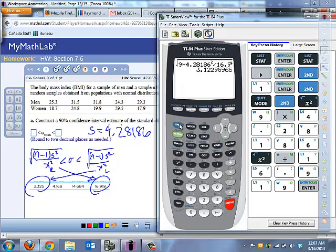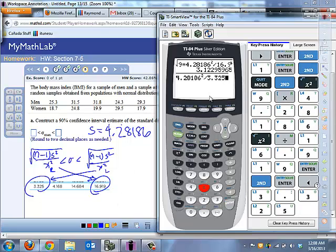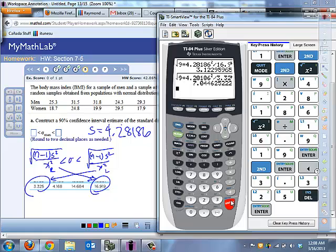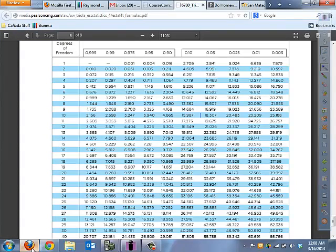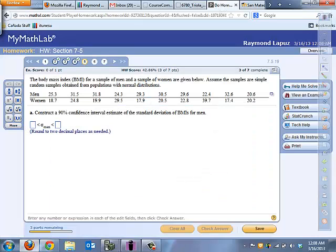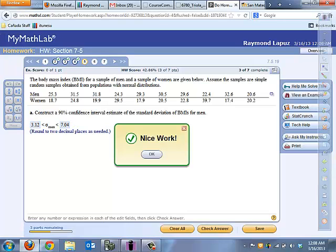To get the other upper bound, we're essentially going to type the same thing. So I'm going to press second function and enter to get us to the previous entry. And I'm going to move my cursor to the left until I get to the beginning of the denominator. And I'll just change the chi-squared value in the denominator. And I'm going to put 3.325. Now, I have a blinking nine here, which I don't want. So I'm going to press delete for that. Don't press clear. Press delete. And then if I press enter, I'm going to get the right-hand side of that, 7.04. So let's try putting in those values, 3.12 and 7.04. 3.12 and 7.04. And then we got it right.